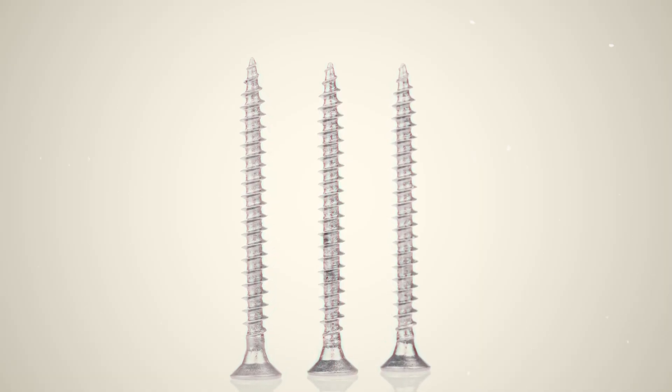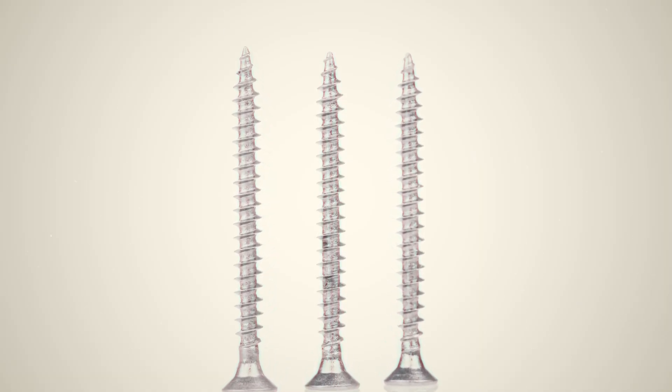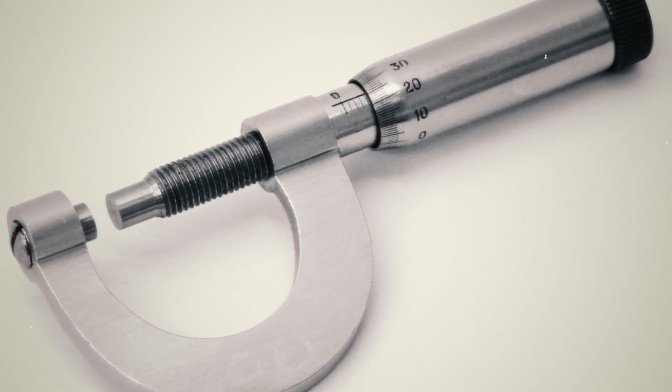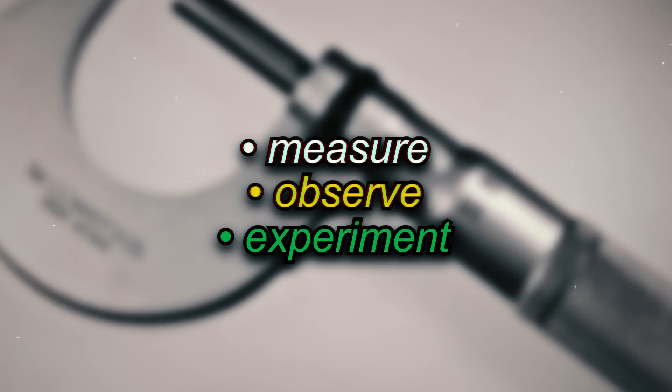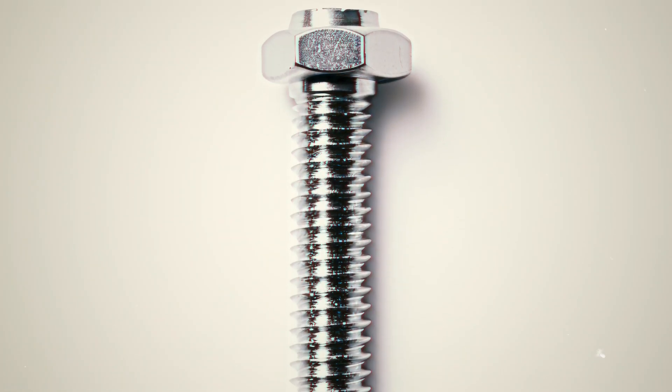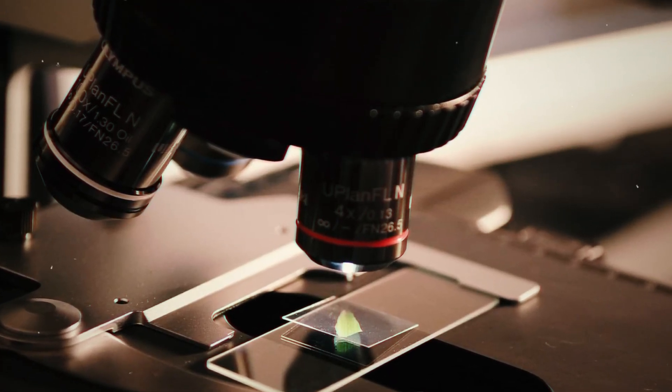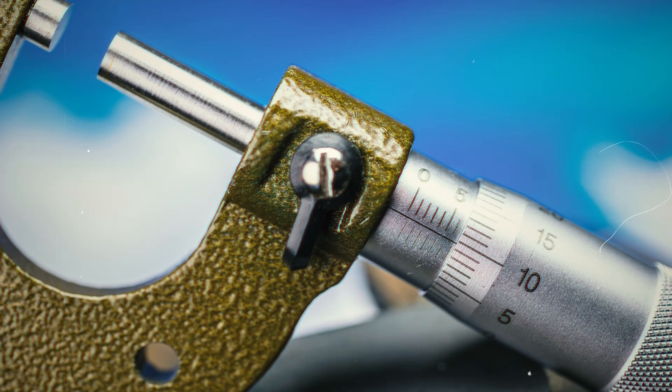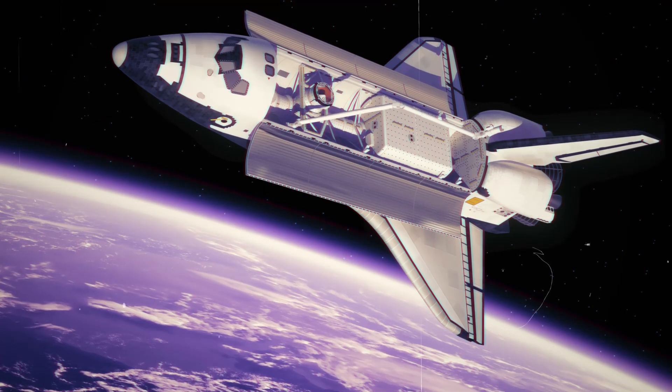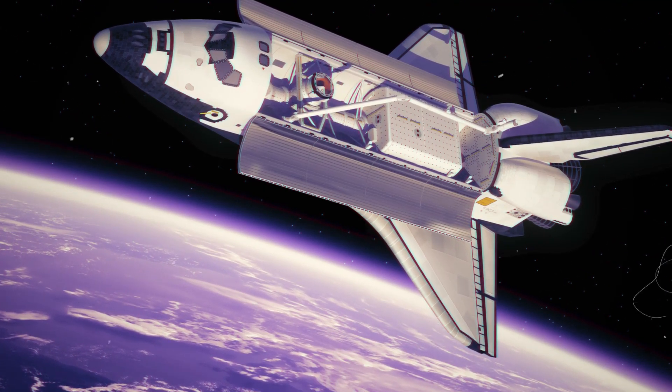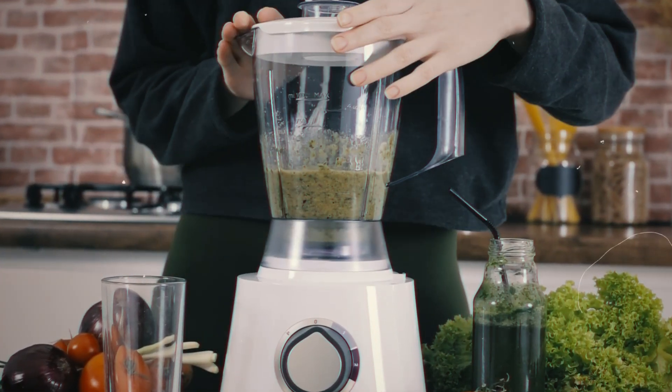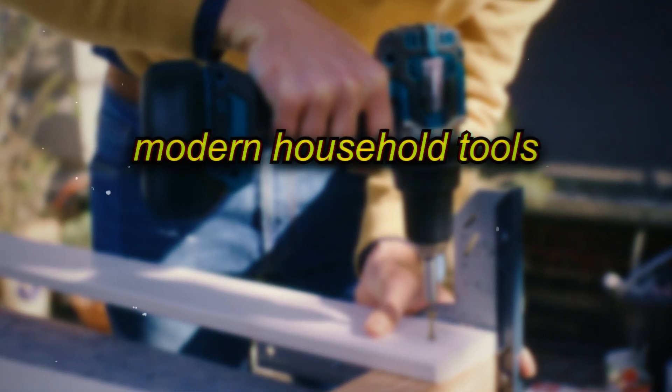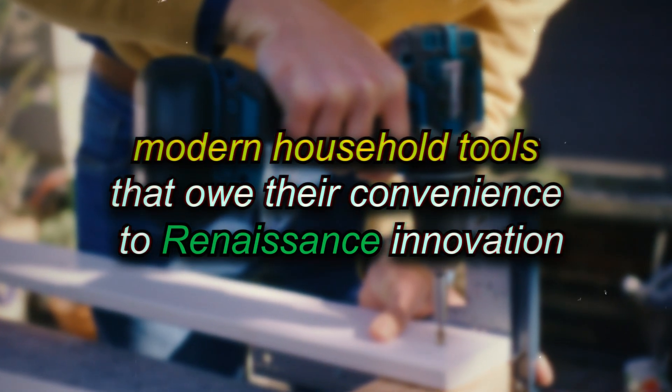The improved precision was instrumental in sparking the scientific revolution, allowing scientists to build devices that could measure, observe, and experiment with a level of detail that had never been possible before. This era saw the screw become a true instrument of progress, playing a key role in the birth of modern science. Its precision allowed inventors to experiment with groundbreaking machinery, paving the way for new technologies in astronomy and physics. Today, we see the echoes of this precision in everything from kitchen blenders to electric screwdrivers, modern household tools that owe their convenience to renaissance innovation.